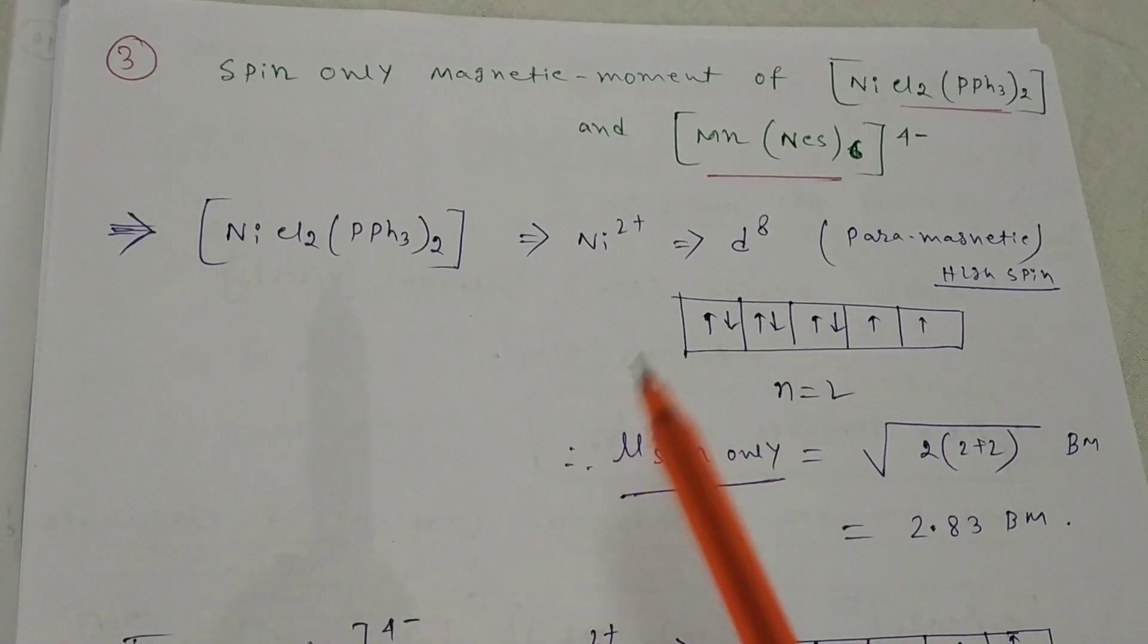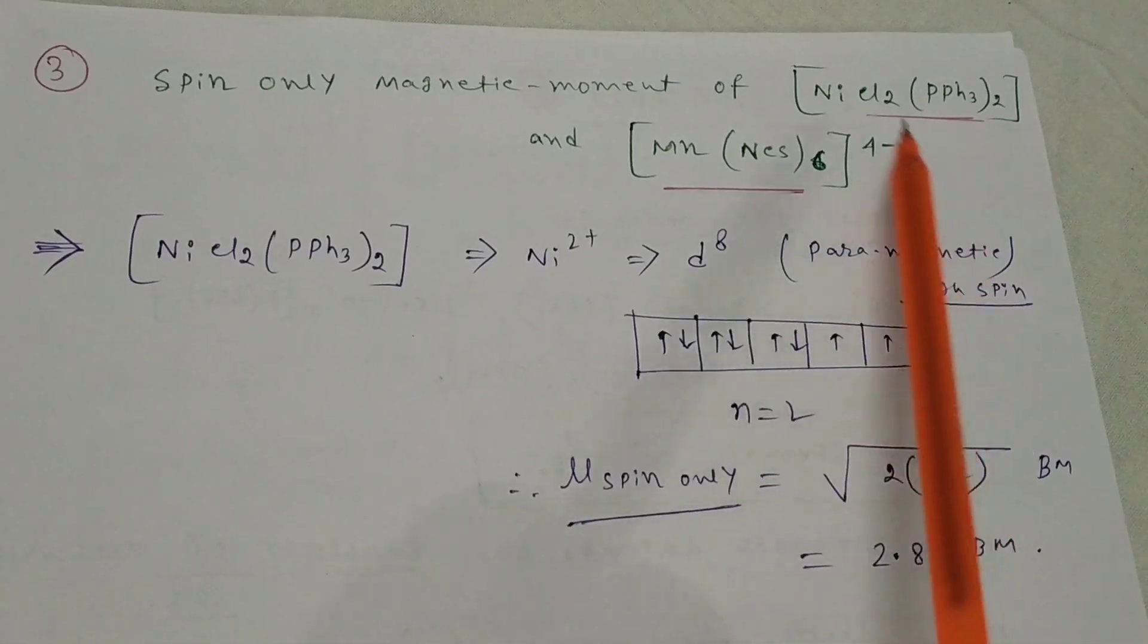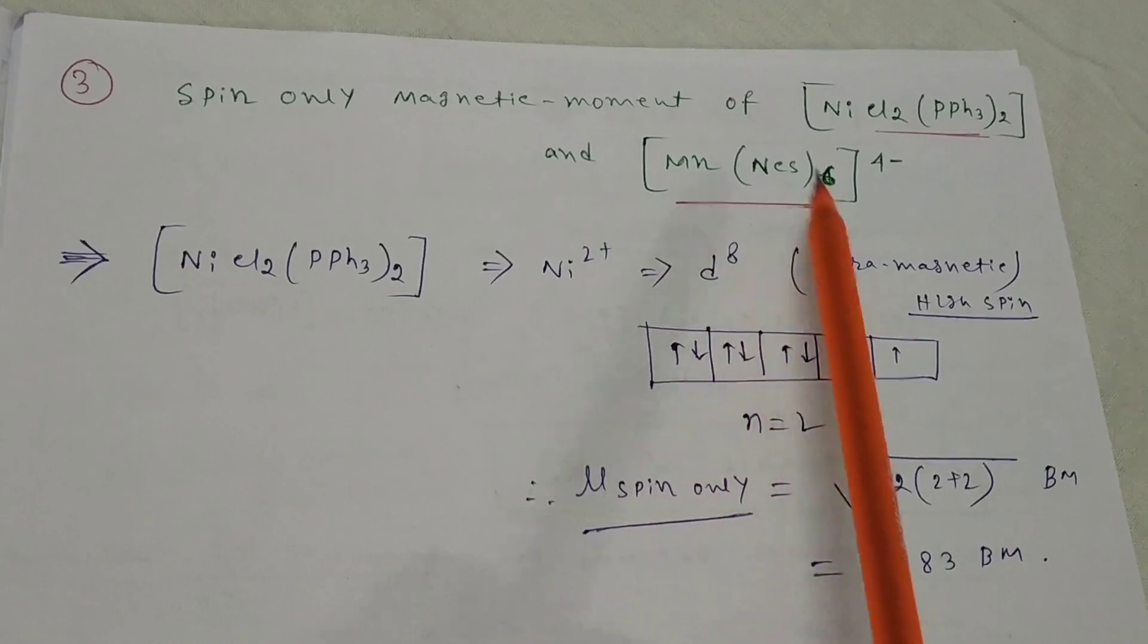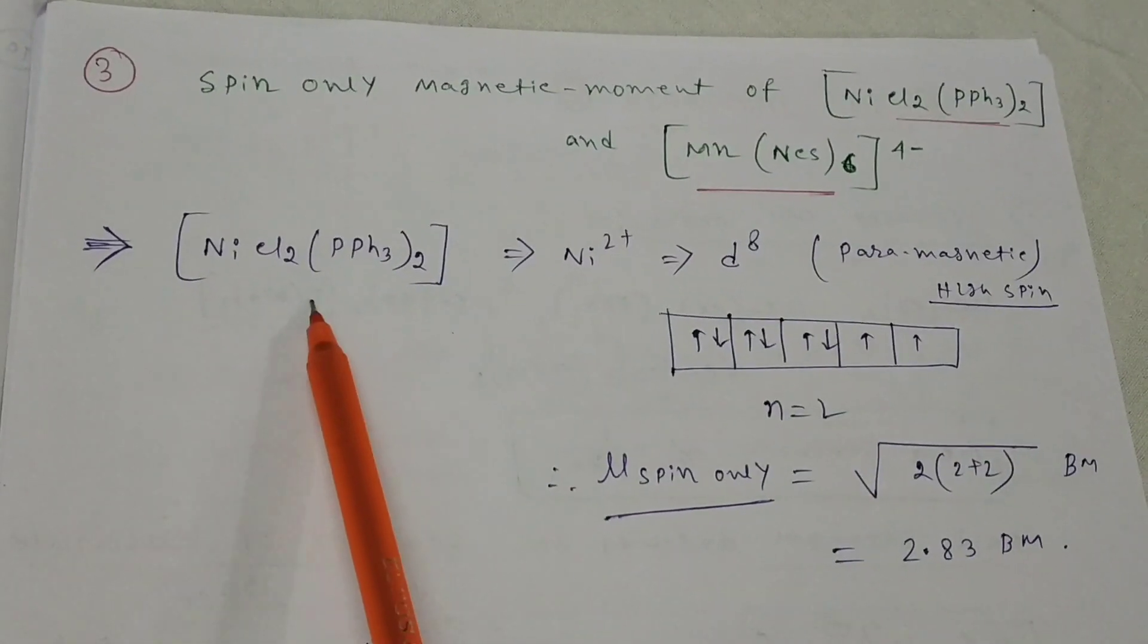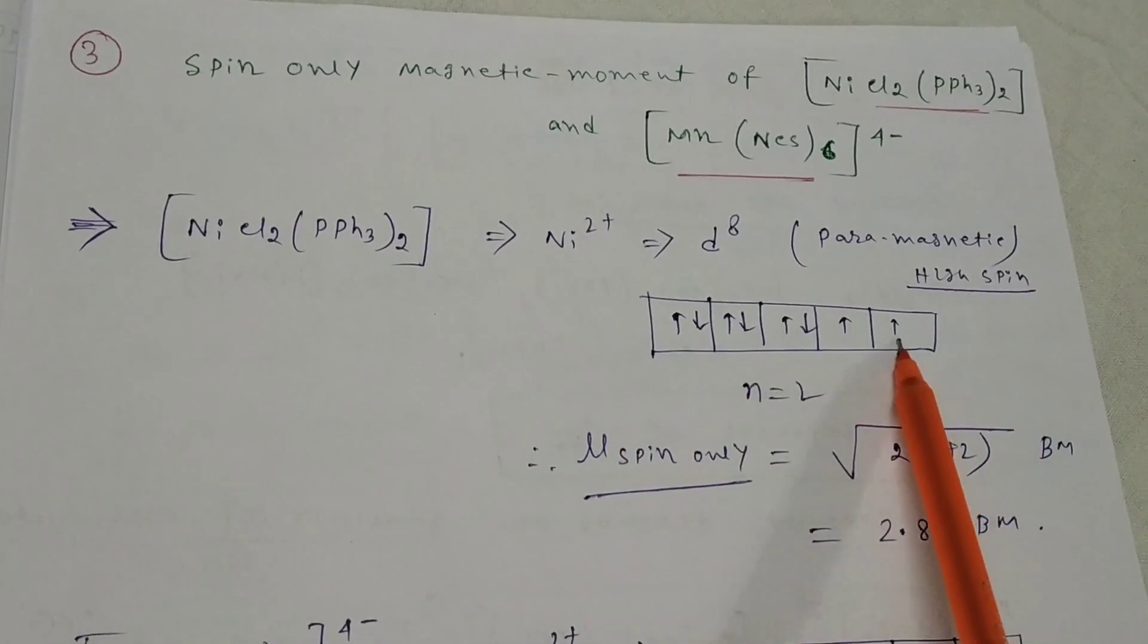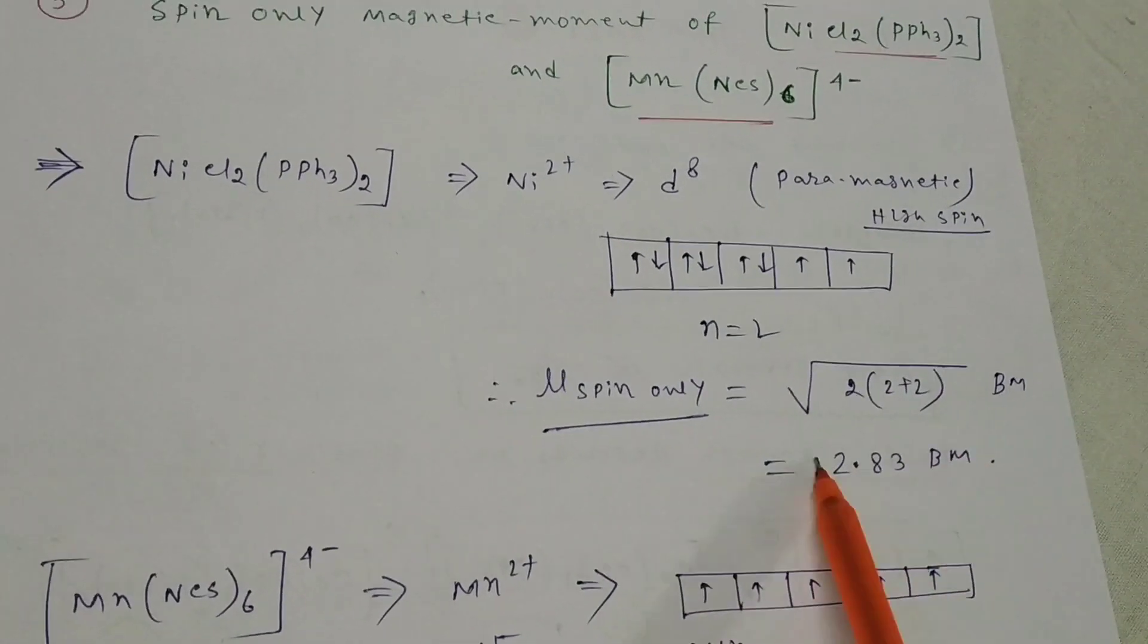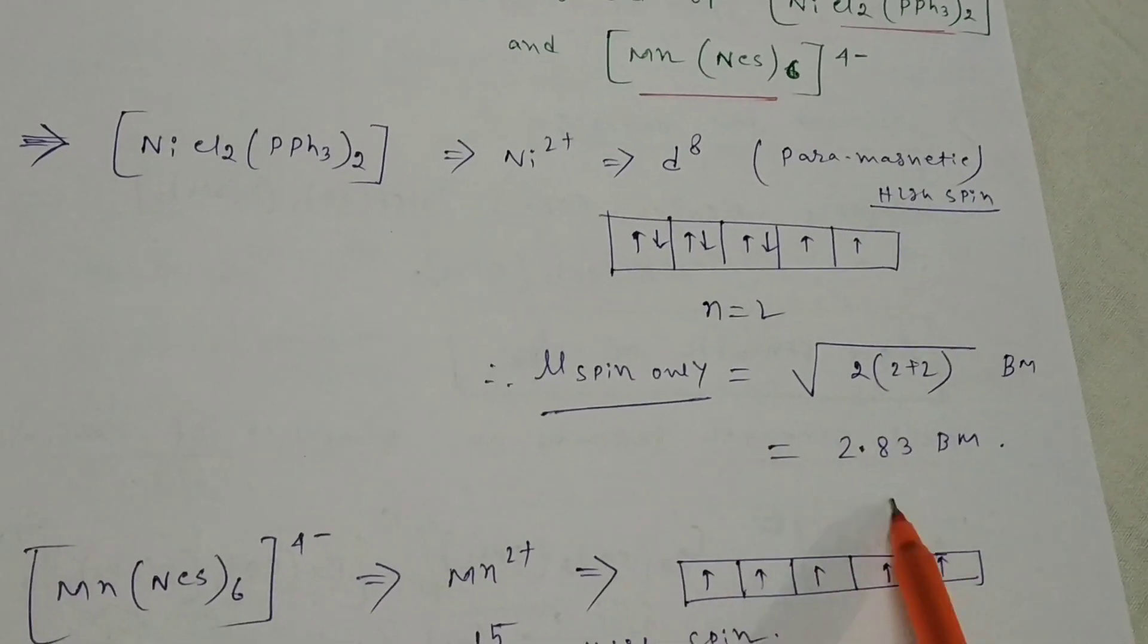The third question: spin-only magnetic moment for NiCl2(PPh3)2 and Mn(NCS)6^4-. For NiCl2(PPh3)2, this is Ni2+ d8, paramagnetic and high spin complex. Two unpaired electrons are present, so mu spin-only value will be root of 2 times 2 plus 2, that is root 8 equal to 2.83 Bohr magneton.